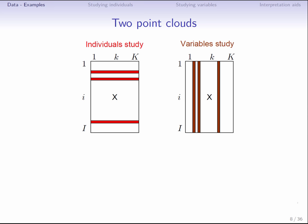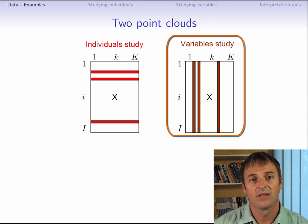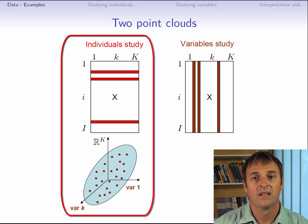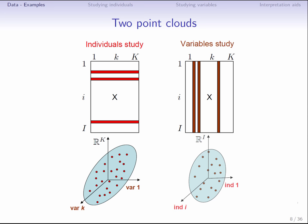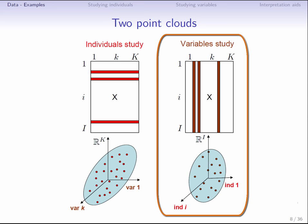Let's now start to get into the details. We said earlier that we can look at our data table as a set of rows or as a set of columns. If we see it as a set of rows, we aim to study individuals. If we see it as a set of columns, we aim to study variables. Studying individuals can be seen as considering a cloud of points, where each point corresponds to an individual. This point cloud lives in a space with many dimensions. If there are K variables, it lives in a K-dimensional space. When studying variables, each is a point in a high-dimensional space. That is to say, there are I coordinates for each variable. Therefore, we see a cloud of variables in R^I.